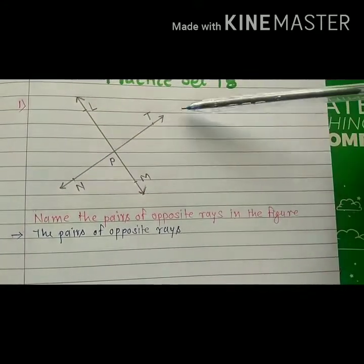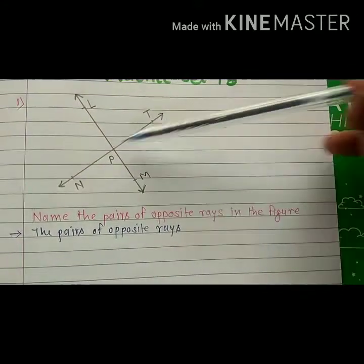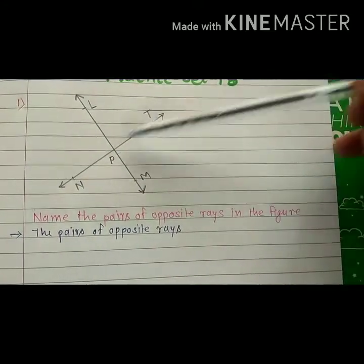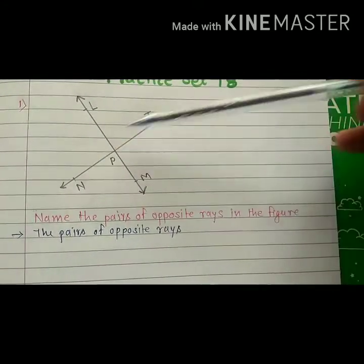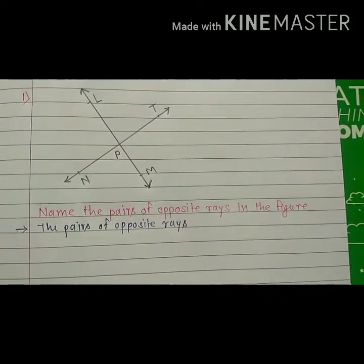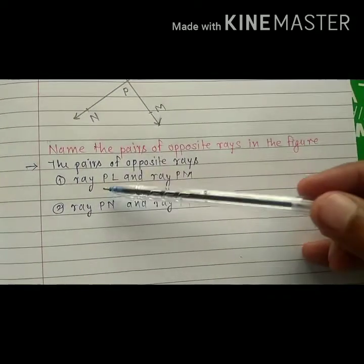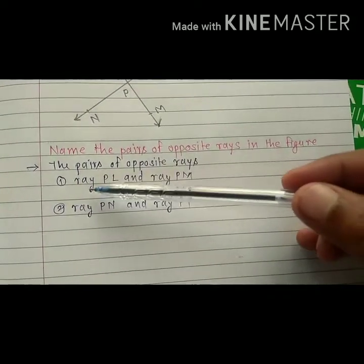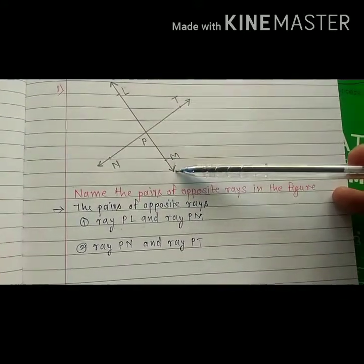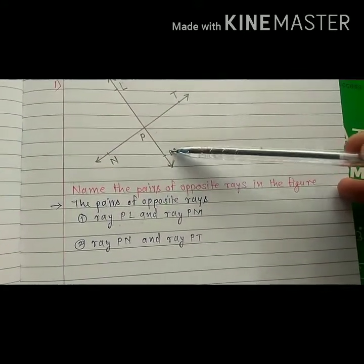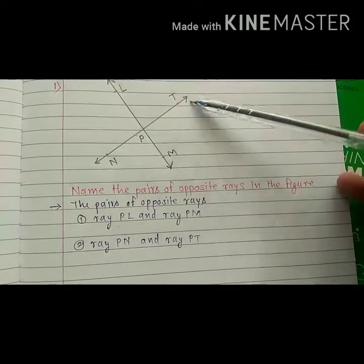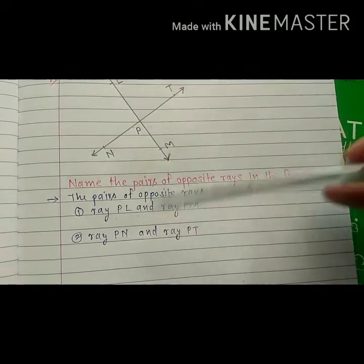Ray PM and ray PT together form a straight line, so PM and PT are opposite rays. The answer is: first pair is ray PL and ray PM are opposite rays; second pair is ray PM and ray PT are opposite rays.